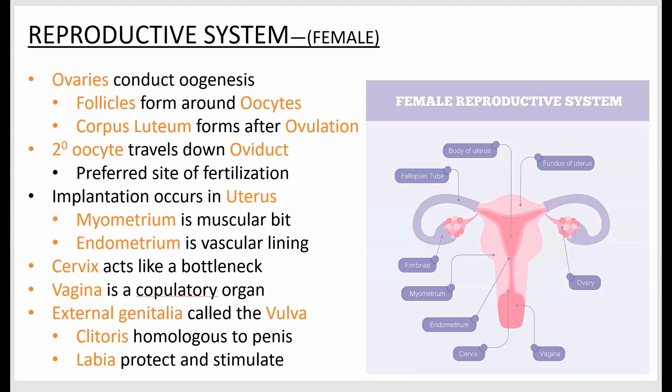After the follicle releases the oocyte during ovulation, it becomes what's called a corpus luteum, which produces different hormones. Ideally, fertilization occurs in the oviduct — sometimes called the fallopian tube, though oviduct is more descriptive. It takes the ovum from the ovary to the uterus, and fertilization should occur in this oviduct.